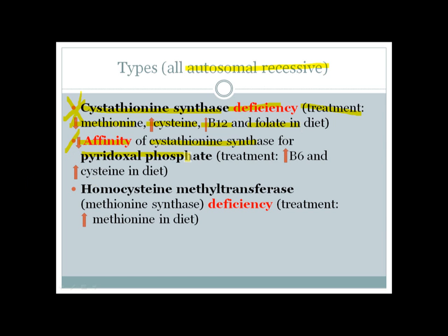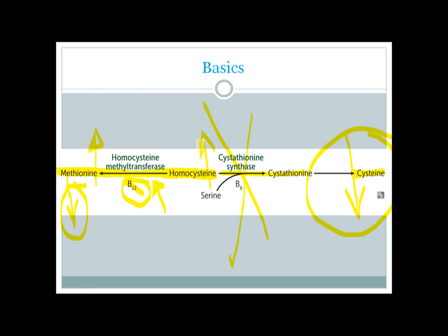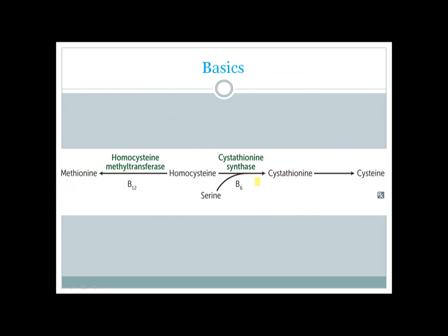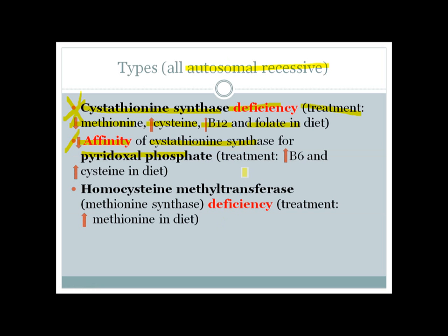Another cause of homocystinuria is decreased affinity of cystathionine synthase for pyridoxal phosphate. This is similar to cystathionine synthase deficiency, but these patients are less severely affected than those with a complete deficiency. Since B6 deficiency slows this reaction and lowers cysteine levels, treatment involves supplementing the patient with vitamin B6 and also cysteine.